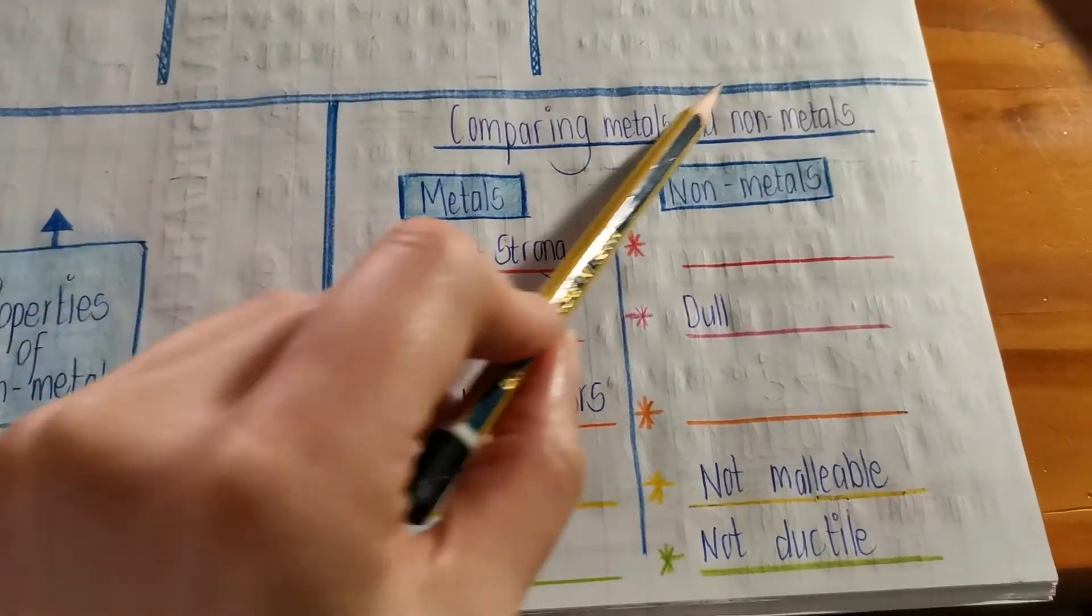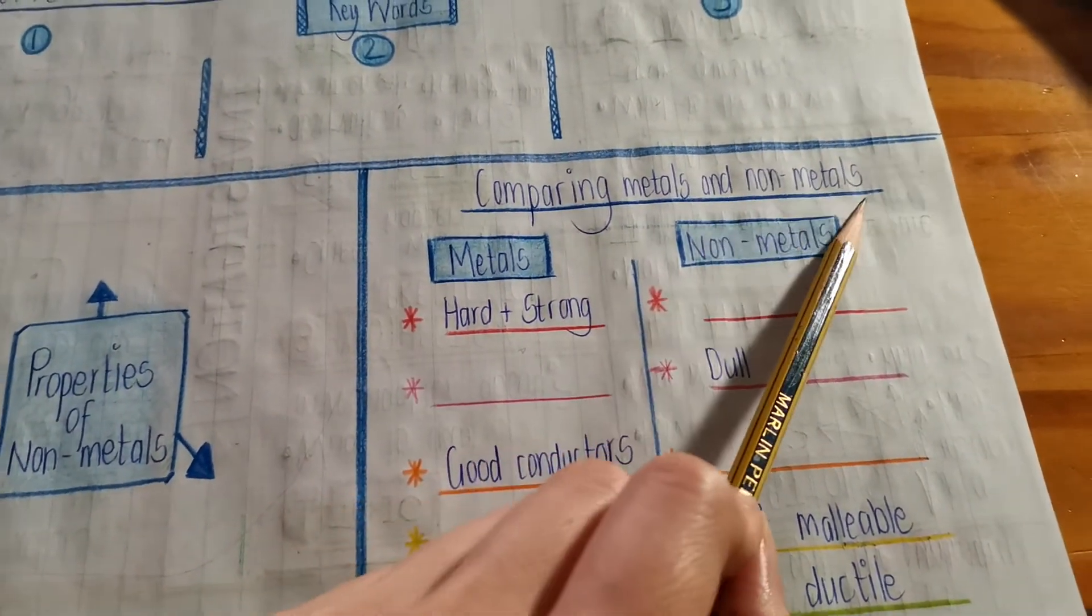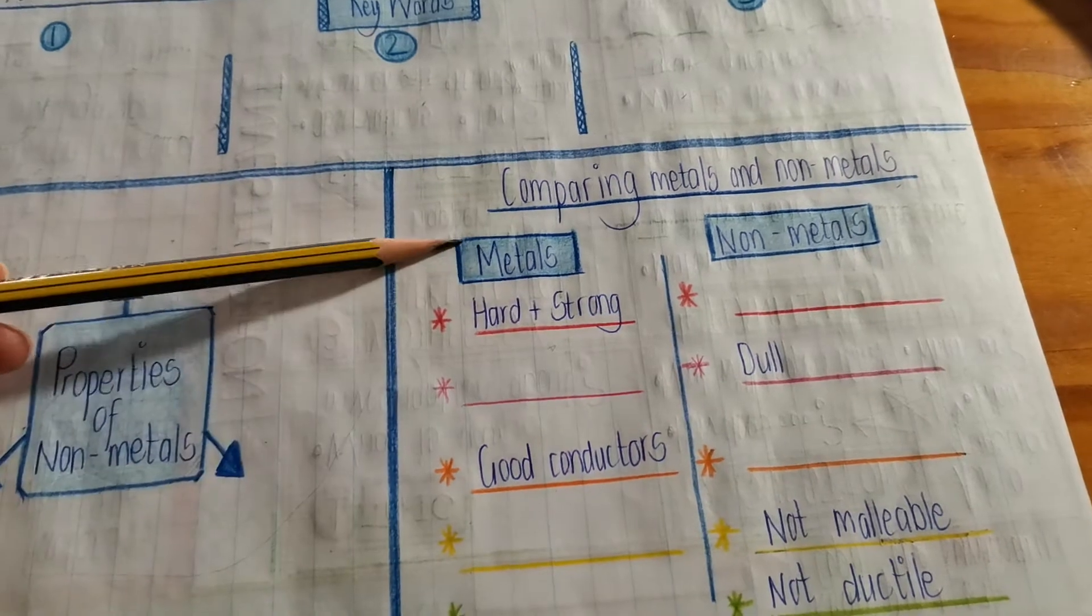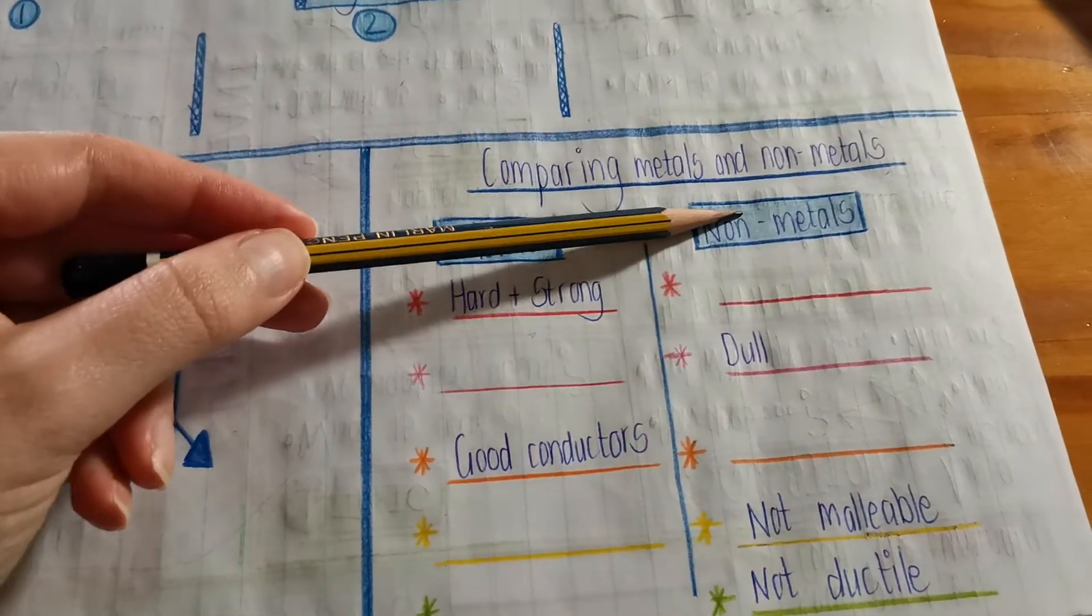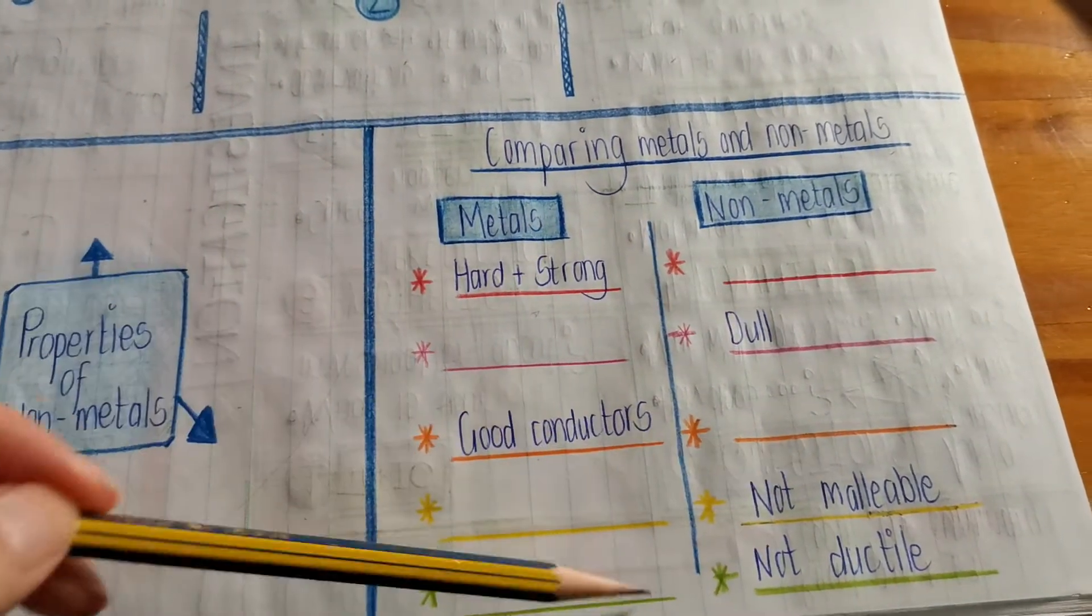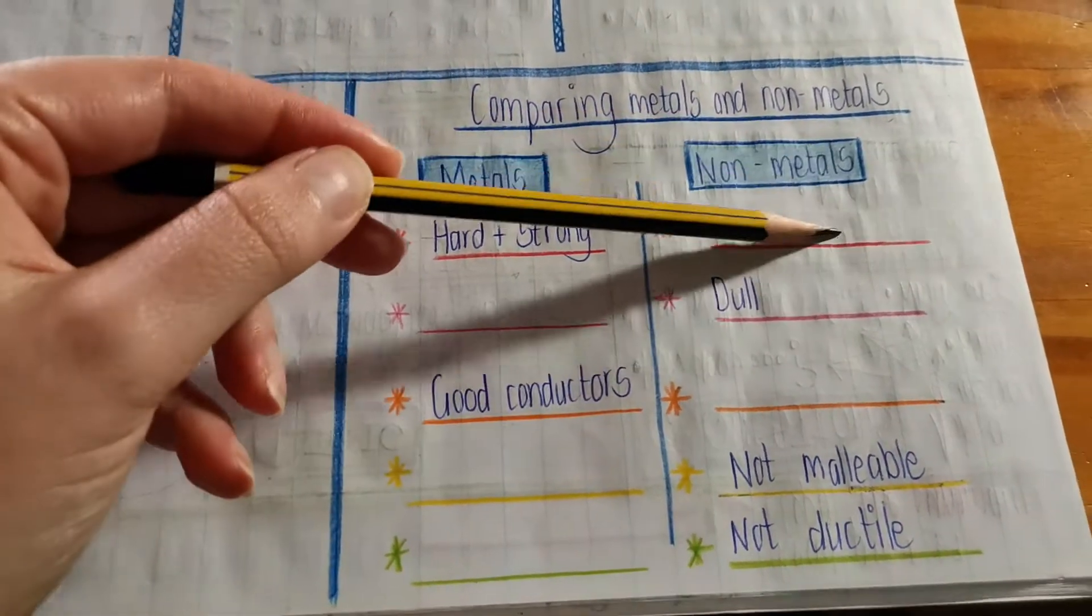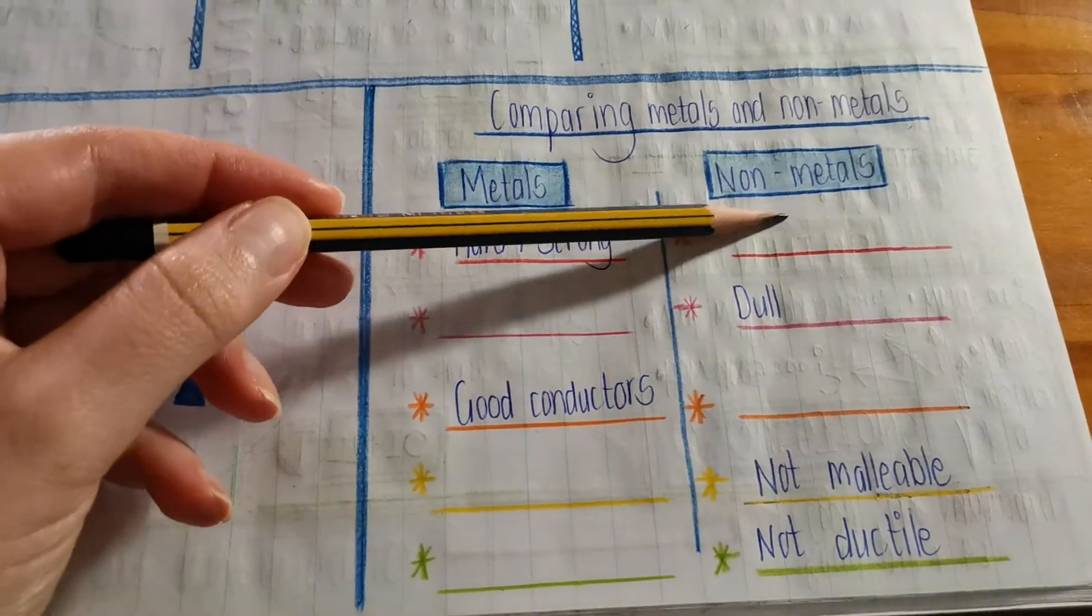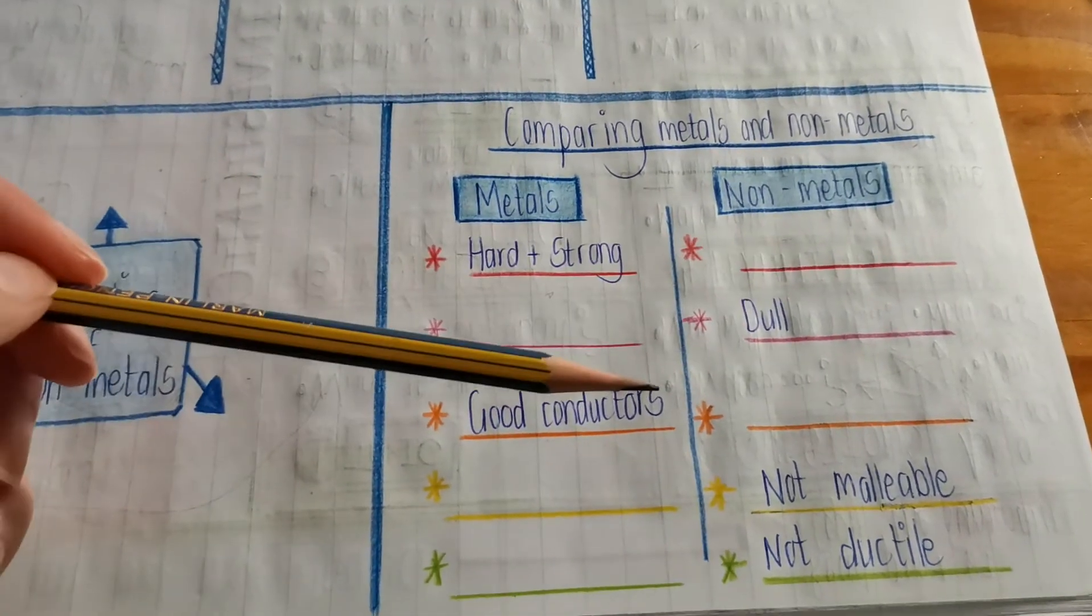Then, yeah, I think some of you struggled. It is comparing metals and non-metals. So, you had to take the properties of metals and compare it with the properties of non-metals. So, I gave you some of the answers. So, if you think about metals, if they are hard and strong, a non-metal is? Who can remember?